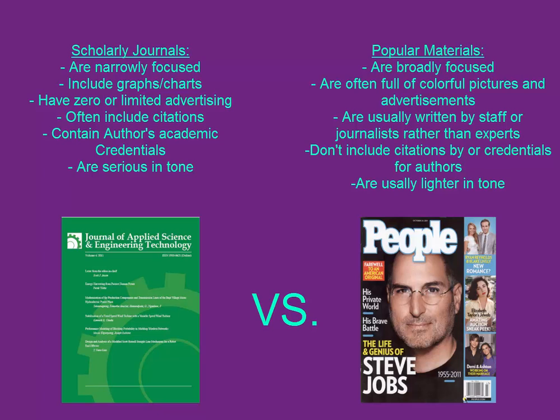Popular materials are pretty easily differentiated — stuff you'd buy at Barnes & Noble. They're broadly focused, they have pictures, they're paid partially by advertising, they're not necessarily written by experts — usually written by a staff — so you don't need credentials or author expertise, and they're less serious in tone. These are certainly appropriate if you're doing a popular topic, but for any academic topic, you're going to want to focus on scholarly journals.